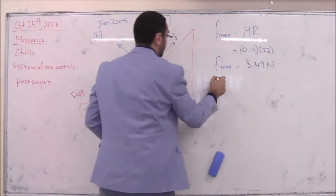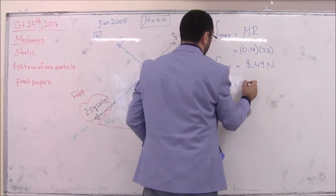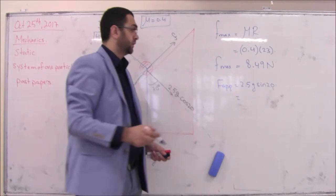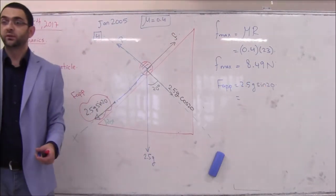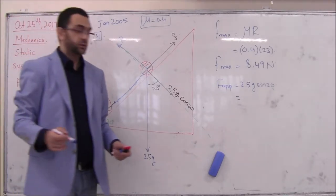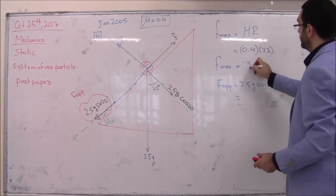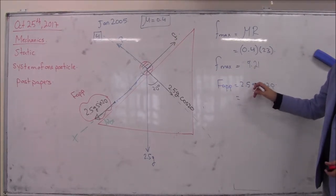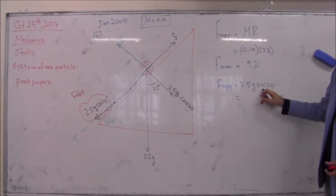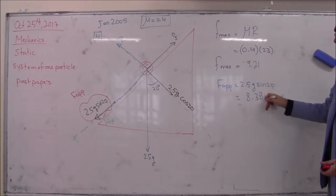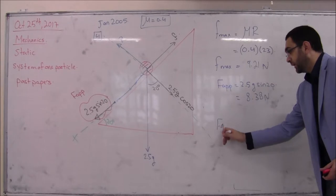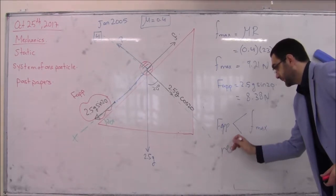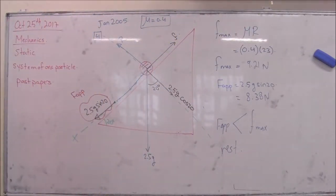F_applied equals 2.5g sine 20, which is approximately 8.38 Newtons. Since F_applied (8.38) is less than F_max (9.2), the conclusion is that the particle remains at rest.